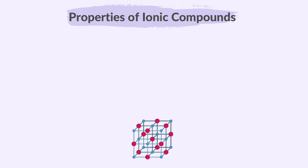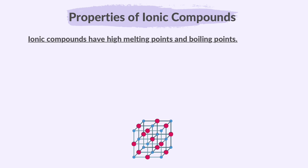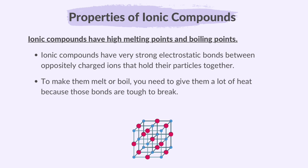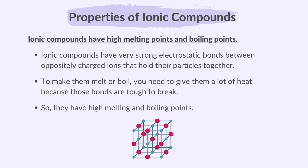Next, let's learn about the properties of ionic compounds. Ionic compounds have high melting points and boiling points. Ionic compounds have very strong electrostatic bonds between oppositely charged ions that hold their particles together. To make them melt or boil, you need to give them a lot of heat because those bonds are tough to break. So they have high melting and boiling points.